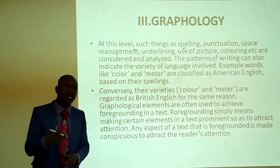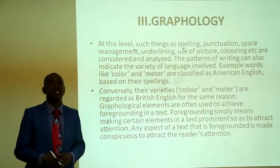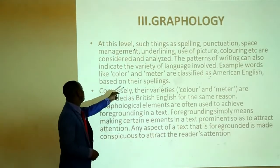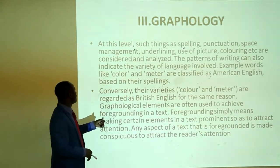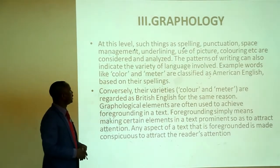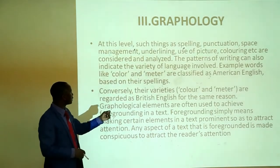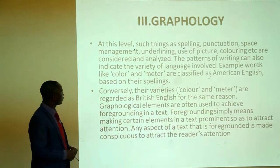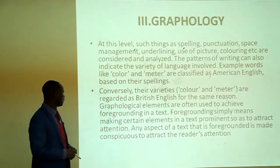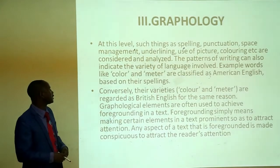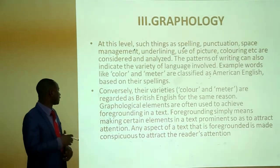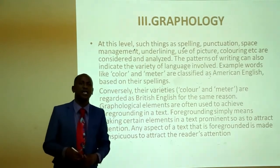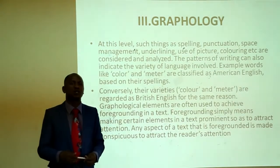For example, words like 'color' and 'meter' are classified as American English, while 'colour' and 'metre' are regarded as British English. Foregrounding simply means making certain elements in a text prominent so as to attract attention. Any aspect of a text that is foregrounded is made conspicuous to attract the reader's attention.